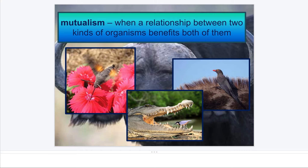Mutualism is when both organisms are benefiting, just like this hummingbird and this flower. The hummingbird is getting the nectar from the flower, and the hummingbird is bringing pollen around to the flowers as it moves from flower to flower — just like the alligator and the bird we saw. Neither of these organisms are being adversely affected; it's helping both of them.